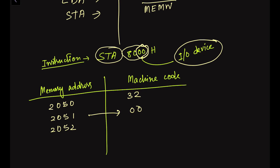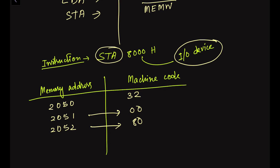So in the memory address 2050 we have the opcode 32H for this instruction. In 2051 we have the lower order address 00, and in 2052 the higher order address 80 is stored. This given instruction is stored in three consecutive memory addresses as shown in this table. Now we have to execute this instruction.